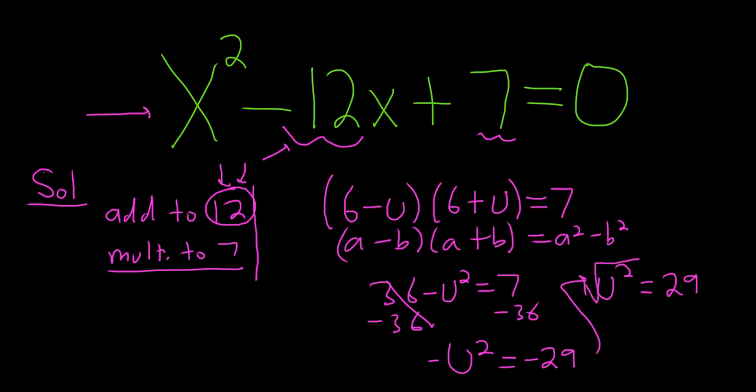Take the square root on both sides. When you take the square root of u squared, you do get a plus or minus. And we're almost done using this super awesome technique of Po Shen Lo. The answers are 6 minus u and 6 plus u, so it's just 6 plus or minus the square root of 29.